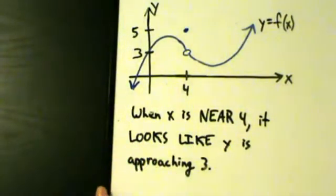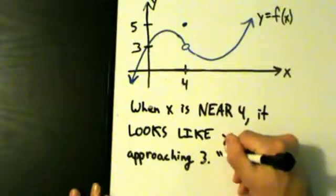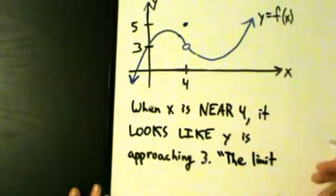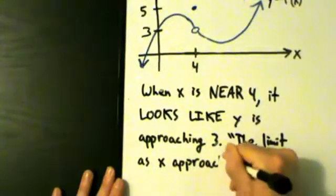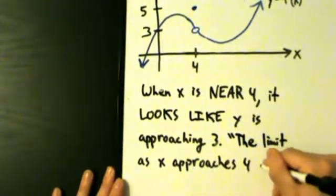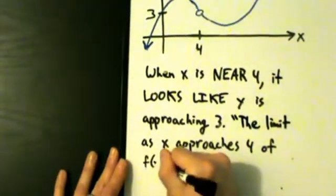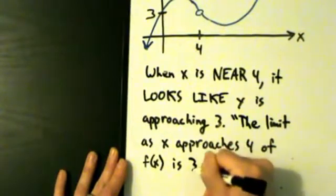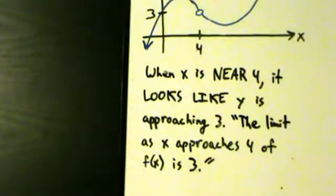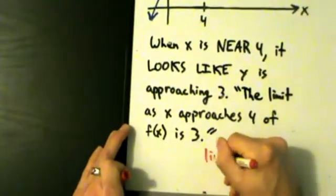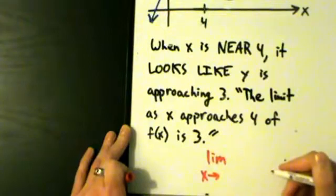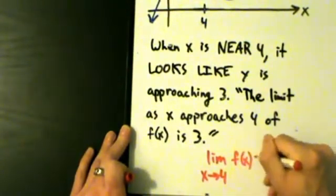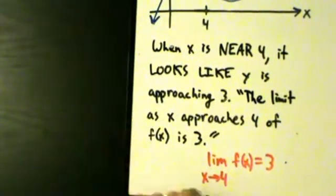So when x is near 4, it looks like y is approaching 3. How do we express this in terms of limits? We say: the limit as x approaches 4 of f of x is 3. And how do we write that in limit notation? We write 'lim' for limit, and then underneath that we write x with a right arrow and 4, then f of x equals 3. So: the limit as x approaches 4 of f(x) is 3.